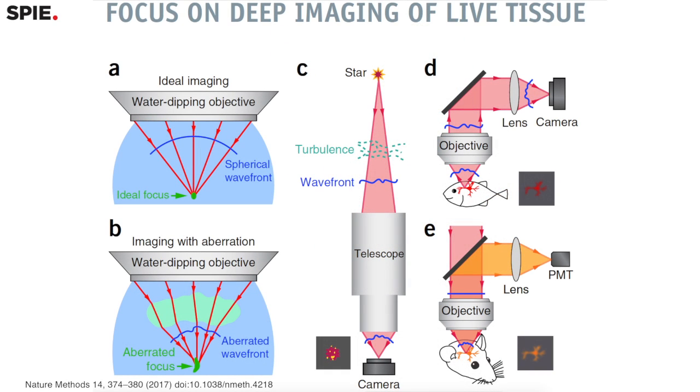When we want to image into a mouse brain, a zebrafish brain, or sea organs — pretty much any biological sample that is a little more complex than cultured cells on a coverslip — the wavefront of the excitation or the fluorescence light can also be distorted by the sample, just like starlight got distorted by the atmosphere.